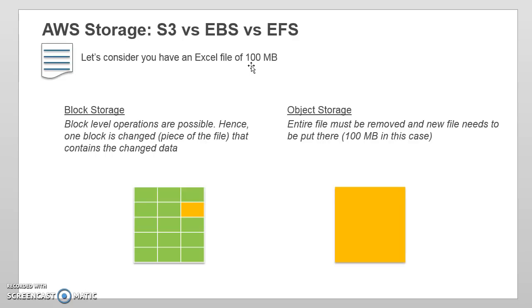If you need very fast read and write operations at the same time, block level storage is the right option. If you're putting files once in a while and they are continuously read after that, object storage is the right solution. But if read and write are both happening simultaneously, object storage is not ideal. In AWS terms, EBS is the block level storage offering — and EFS as well — while S3 is object level storage.